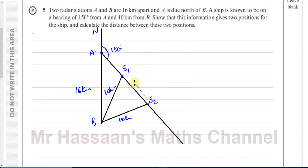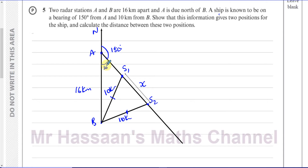I'm going to call this distance X — the distance between S1 and S2. We can consider this like an isosceles triangle. We know what these two sides are. We have a triangle ABS1. From that triangle, we know this angle is 30 degrees because this is a north line — due north — and these two angles add up to 180, so this angle must be 30 degrees. We have this angle and the side opposite it.